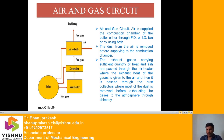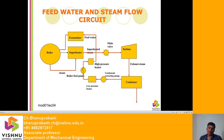That is all for the air and gas circuit. Next is the feed water and steam flow circuit. The boiler generates steam, which passes through the superheater where it becomes superheated. The superheated steam passes through the main valve and enters the turbine. On expanding in the turbine, the turbine rotates — a shaft coupled to the turbine generates power. After expanding in the turbine, the exhaust steam is low-pressure steam, which goes to the condenser where the steam is condensed into water.